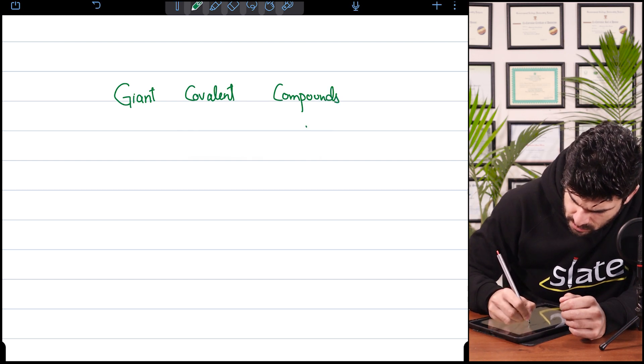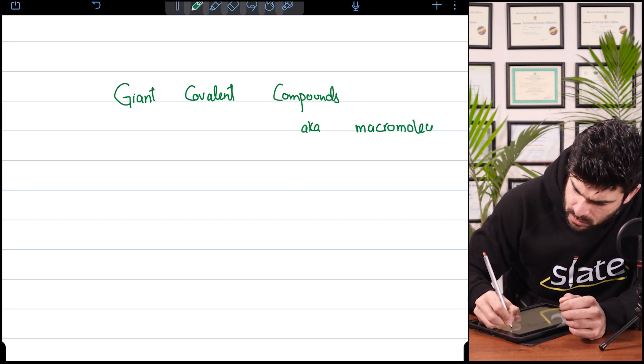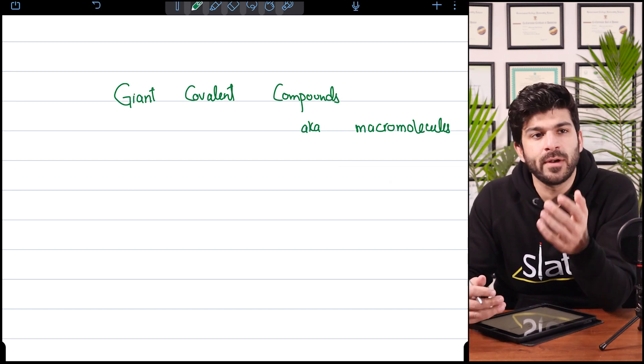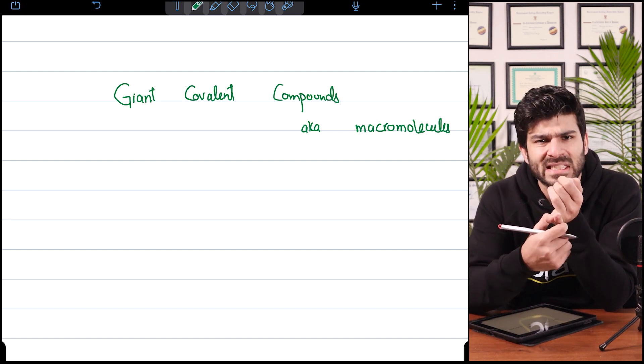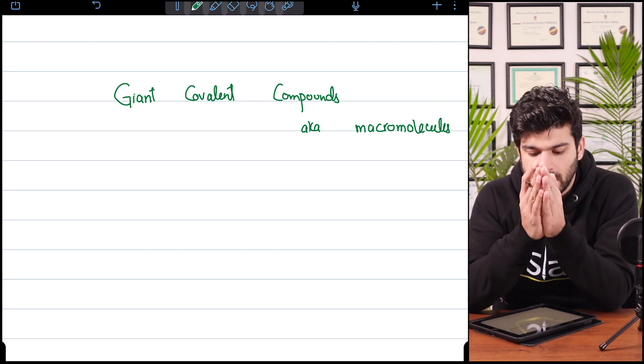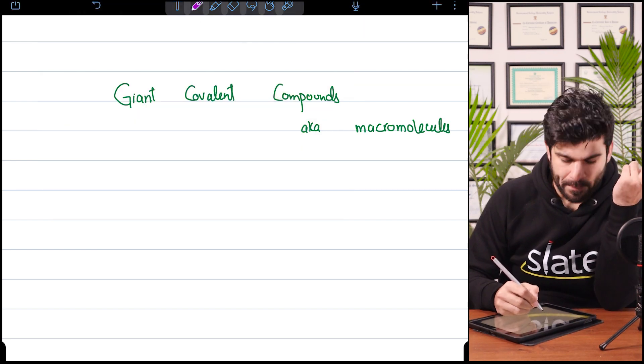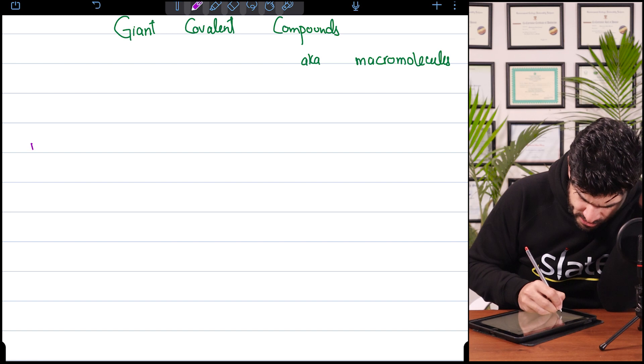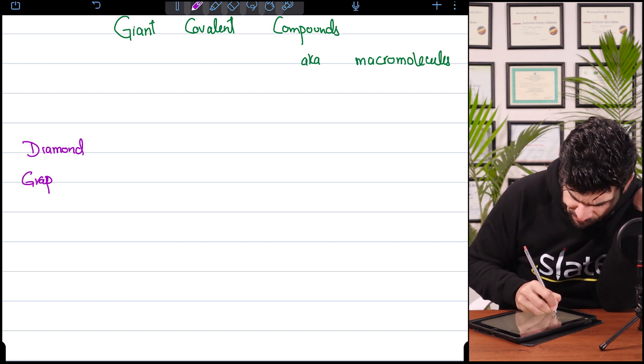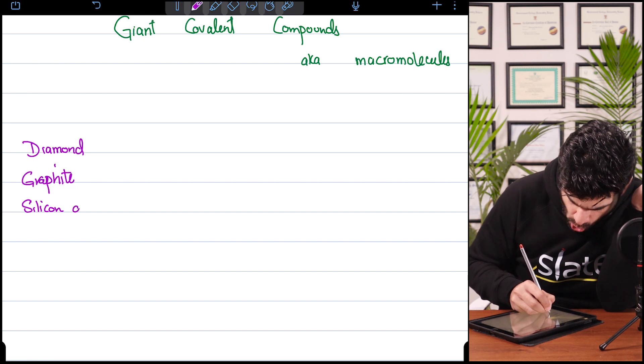Giant covalent compounds are also mentioned in exams as macromolecules. Unlike simple covalent compounds which are liquids and gases with low melting and boiling points and no conductivity, giant covalent compounds operate differently. In your syllabus there are only three examples: diamond, graphite, and silicon dioxide.